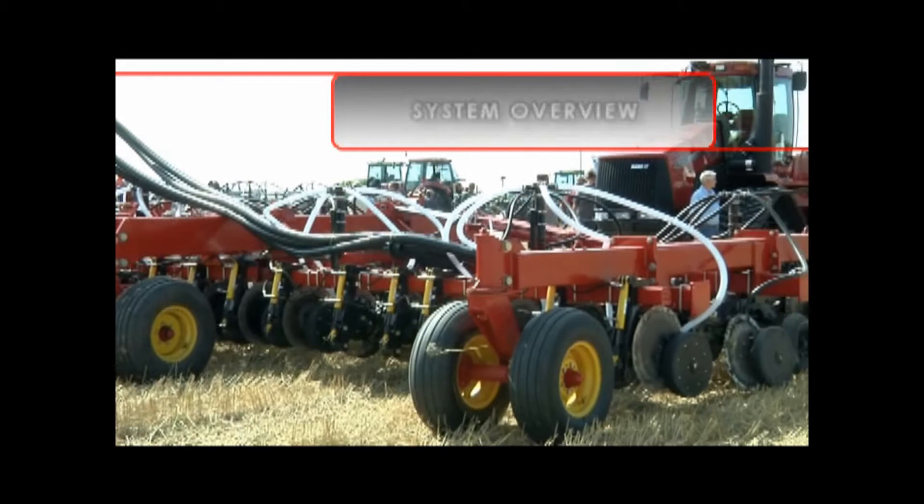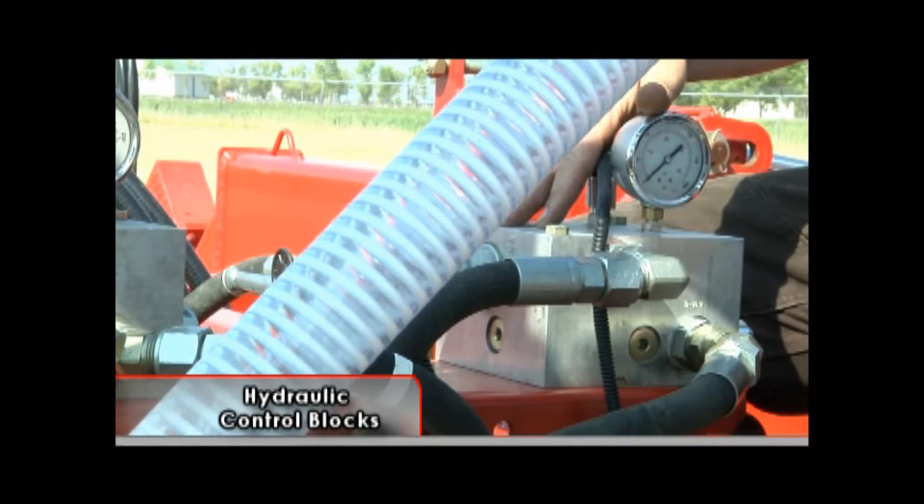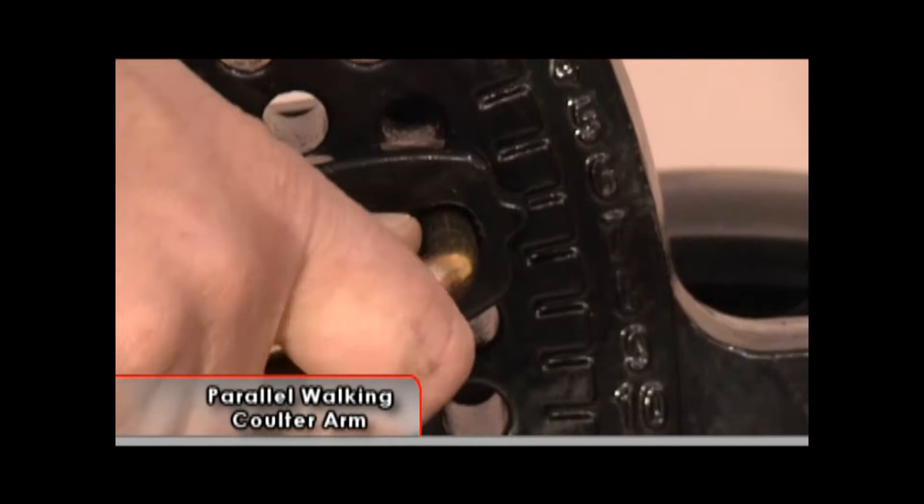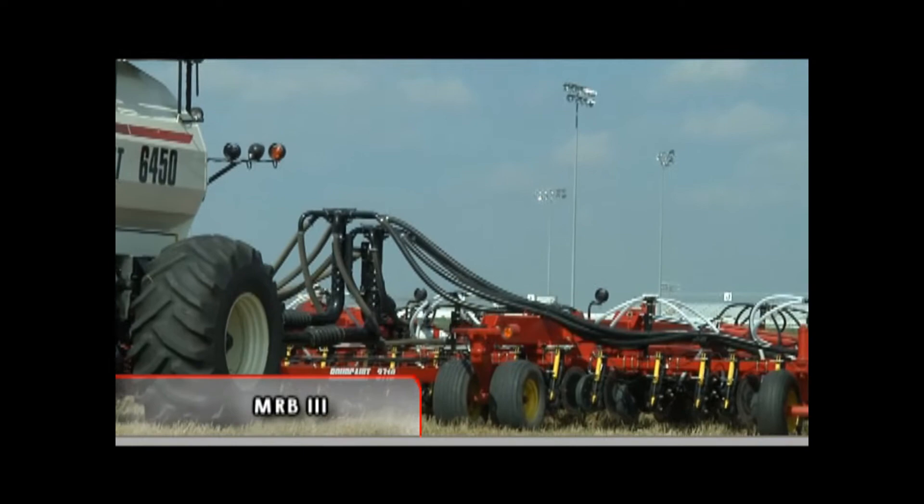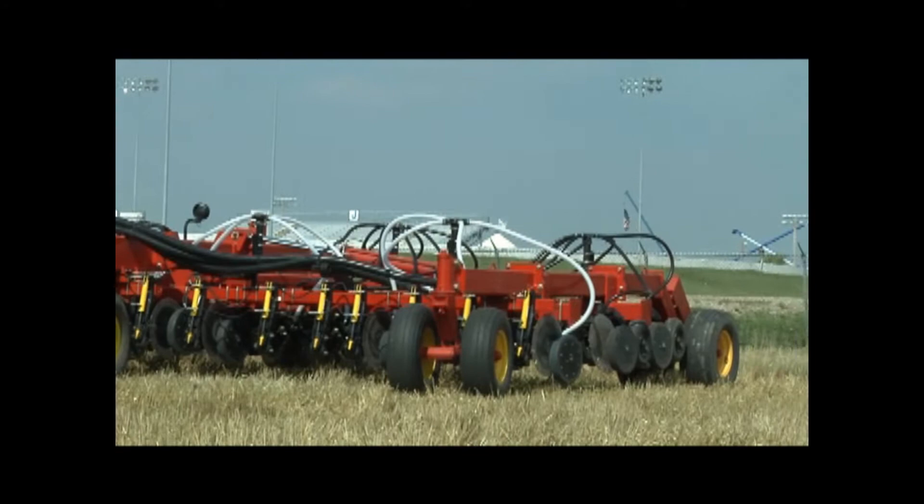Key features of the 3710 independent coulter drill will be covered in this overview. These include the Model 400 control box located in the tractor cab, the hydraulic control box on the drill mainframe, the parallel walking coulter arm including detailed information on breakdown and depth setting, and the optional MRB3 mid-row banders on the front row of the drill. Refer to your operator's manual for more detailed information.